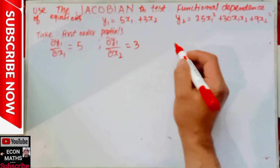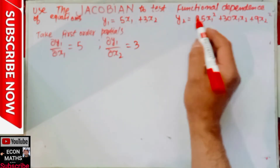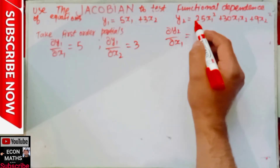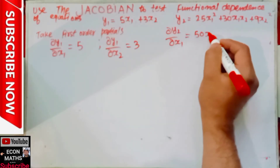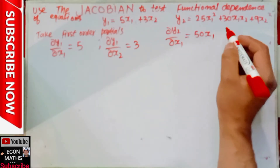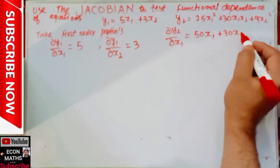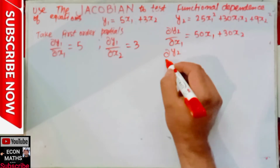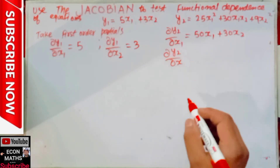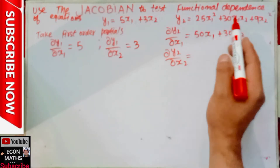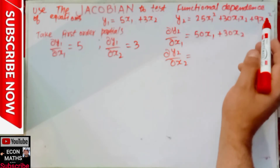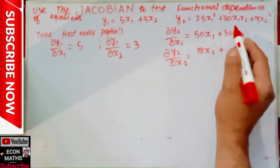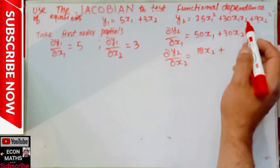Similarly, we take the first-order partials of y2. dy2/dx1: the derivative of 25x1² is 2×25 = 50x1, plus the derivative of 30x1x2 with respect to x1 is 30x2. So dy2/dx1 = 50x1 + 30x2. For dy2/dx2: the derivative of 9x2² is 18x2, plus the derivative of 30x1x2 with respect to x2 is 30x1. So dy2/dx2 = 18x2 + 30x1.